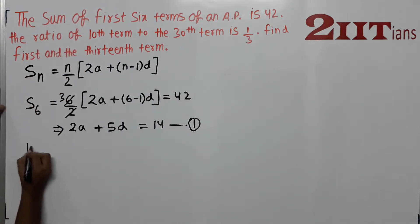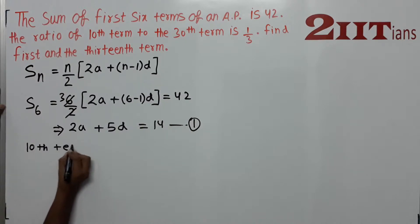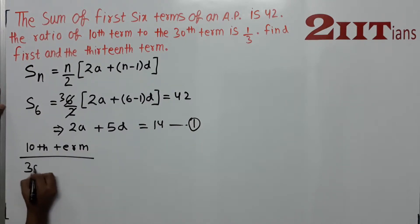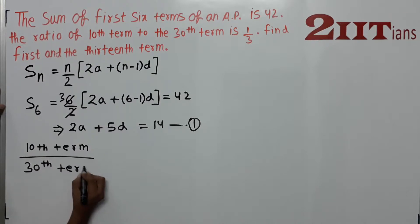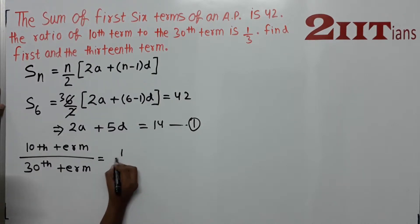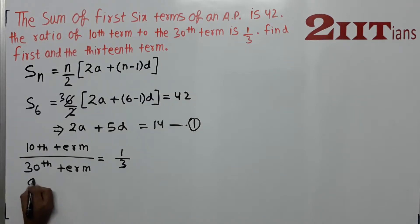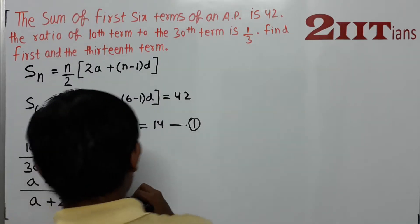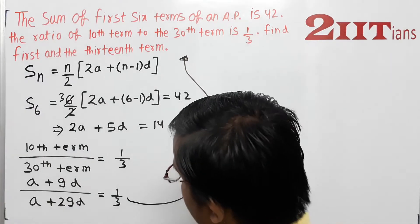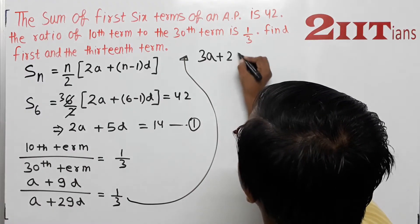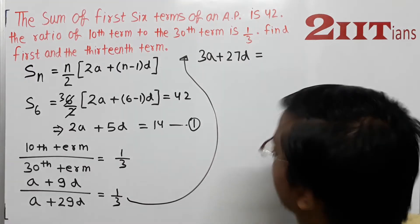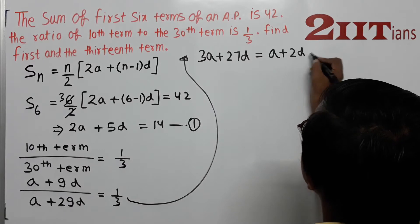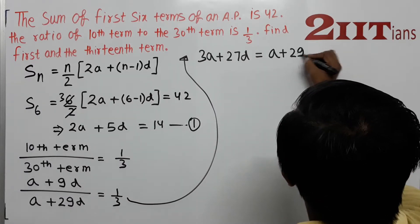We are given the ratio of the 10th term to the 30th term as 1 by 3. The 10th term is A + 9D and the 30th term is A + 29D. Setting up the ratio: (A + 9D)/(A + 29D) = 1/3. Solving this, we get 3A + 27D = A + 29D.